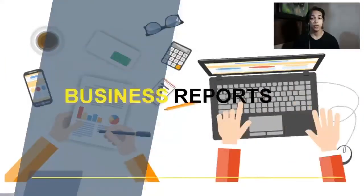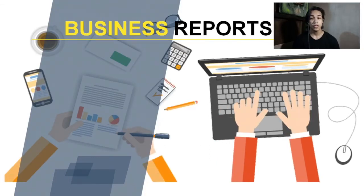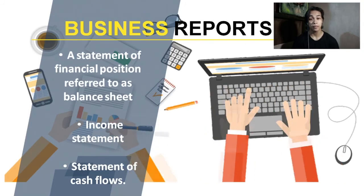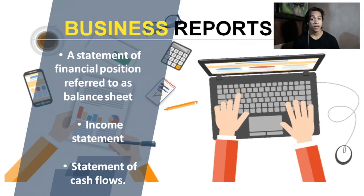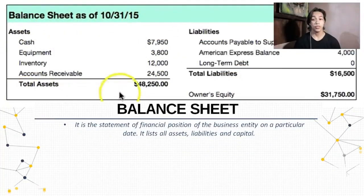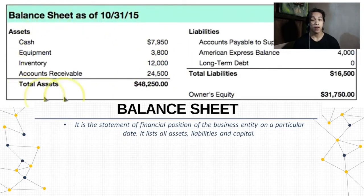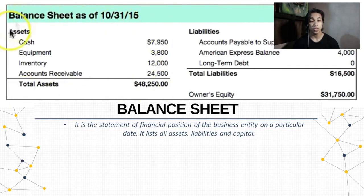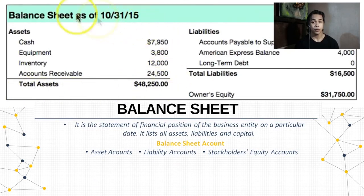Now that we have finished the terminologies, let us proceed to business. A business usually prepares three reports: a statement of financial position referred to as the balance sheet, the income statement, and the statement of cash flow. The balance sheet is the statement of financial position of the business entity on a particular date. It lists all assets, liabilities, and capital. It describes what the business owns and what the business owes — to obtain, which denotes liabilities, and to the owners, which denotes capital. Balance sheet accounts compose of asset accounts, liability accounts, and stockholders' equity accounts.